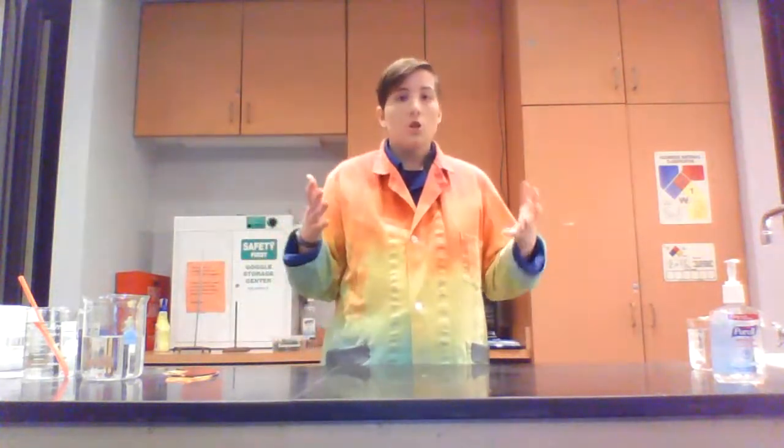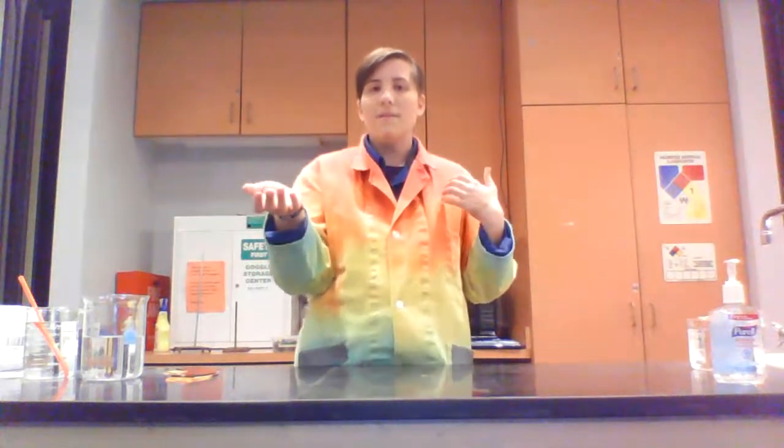So today we are going to be talking all about the science of optical illusions. An optical illusion is a way that we can trick our brains, because what happens is our eyes see something, and then they send a message back to our brain. Now, here's the thing. Sometimes when we see something, our eyes perceive something that isn't really there, so our brain thinks that something is there that really, really isn't.